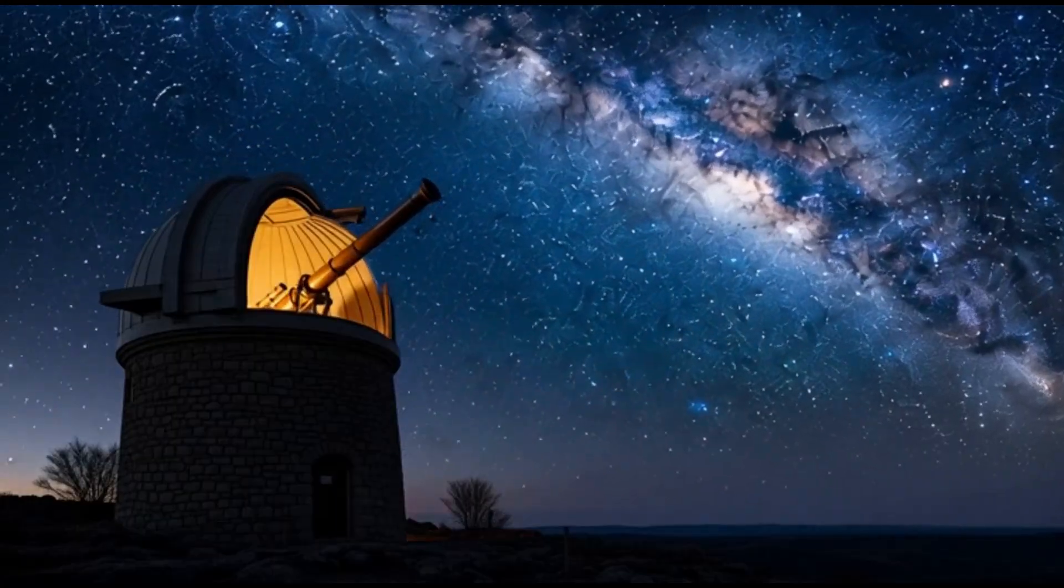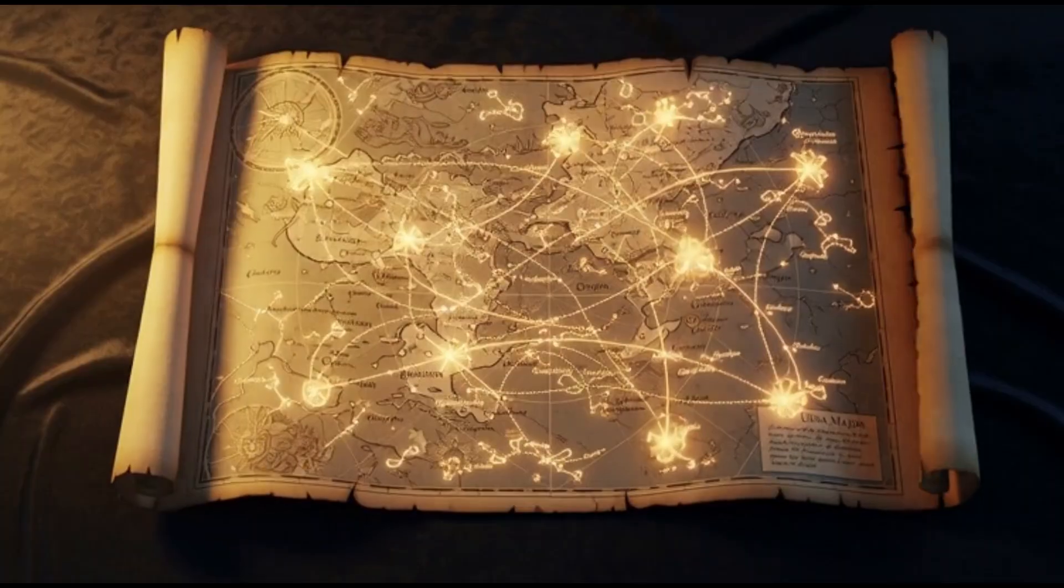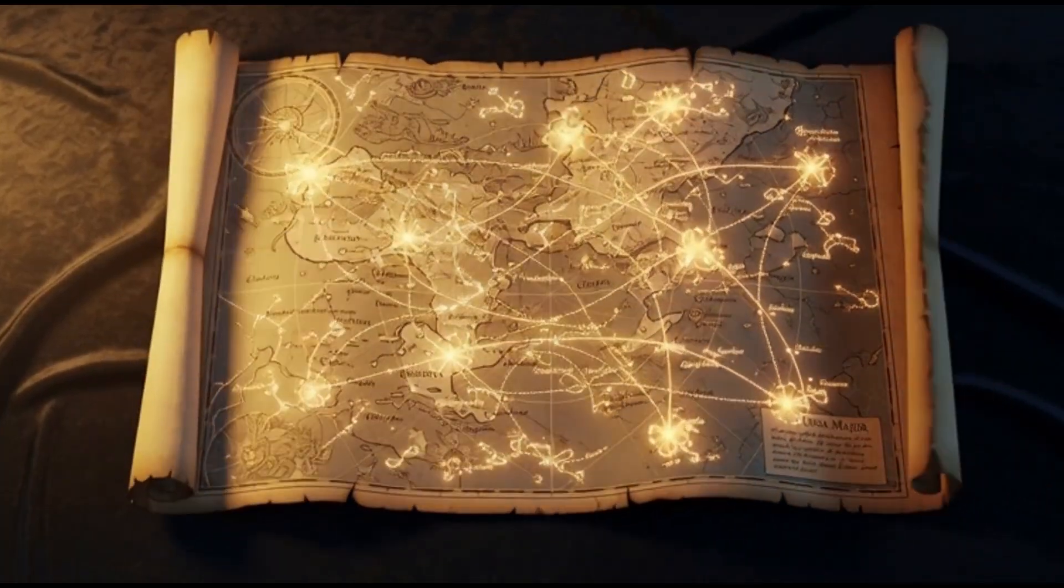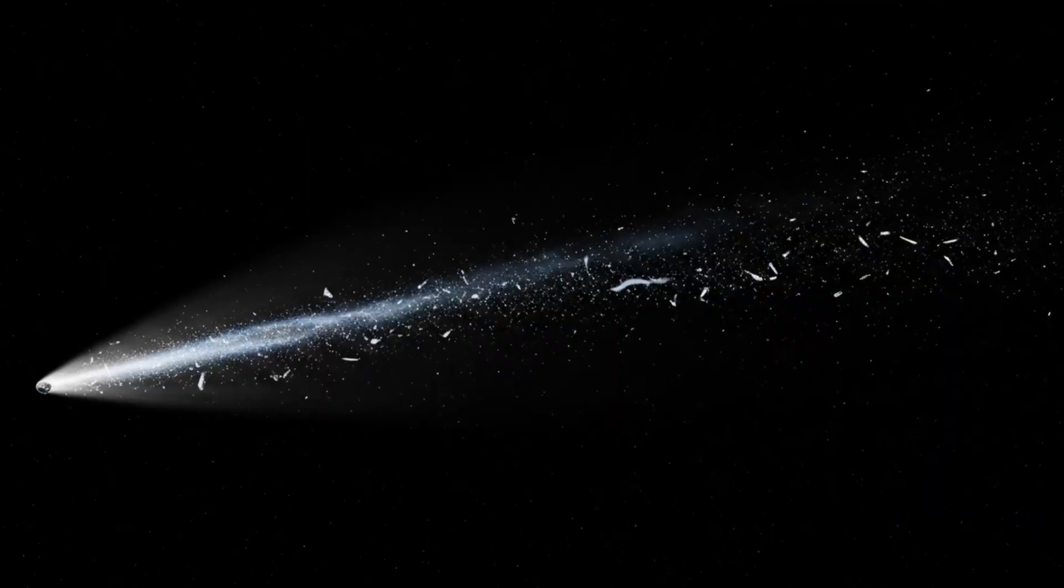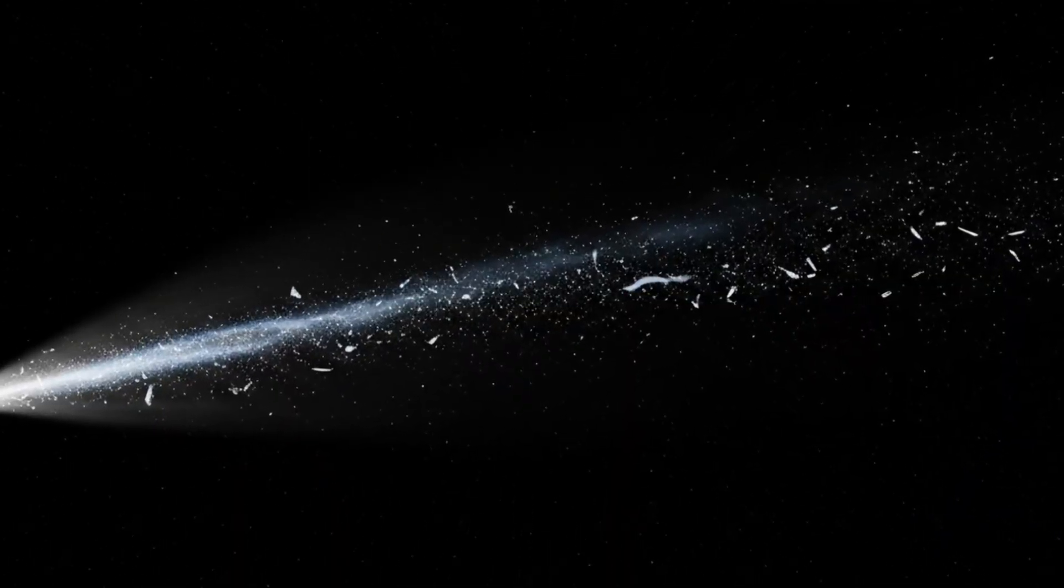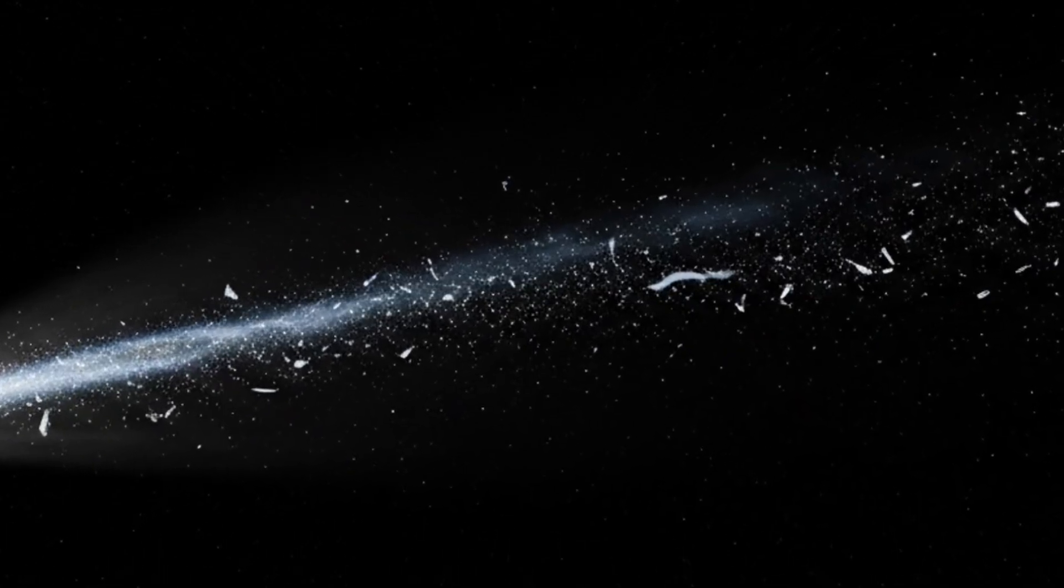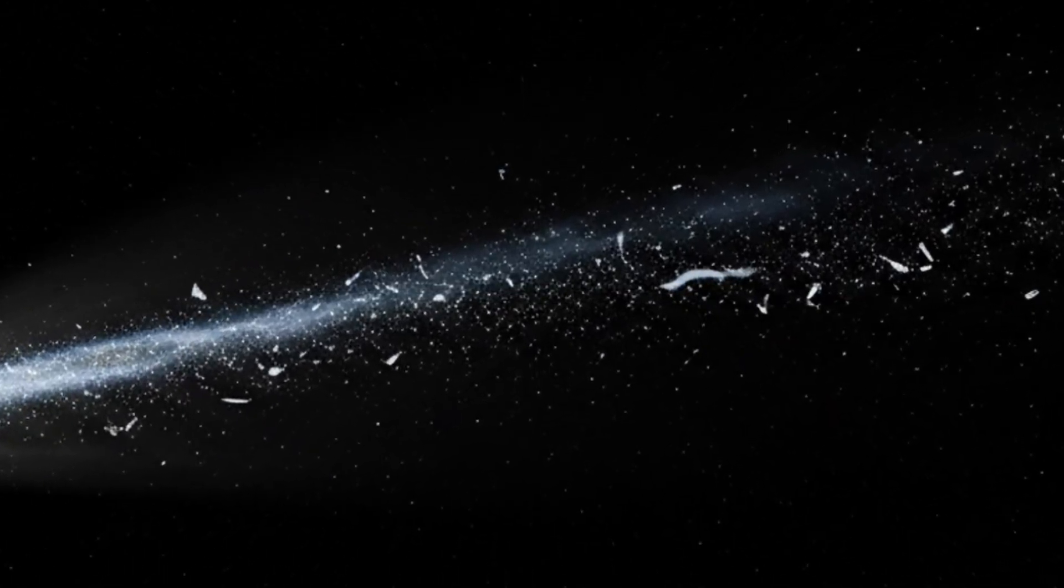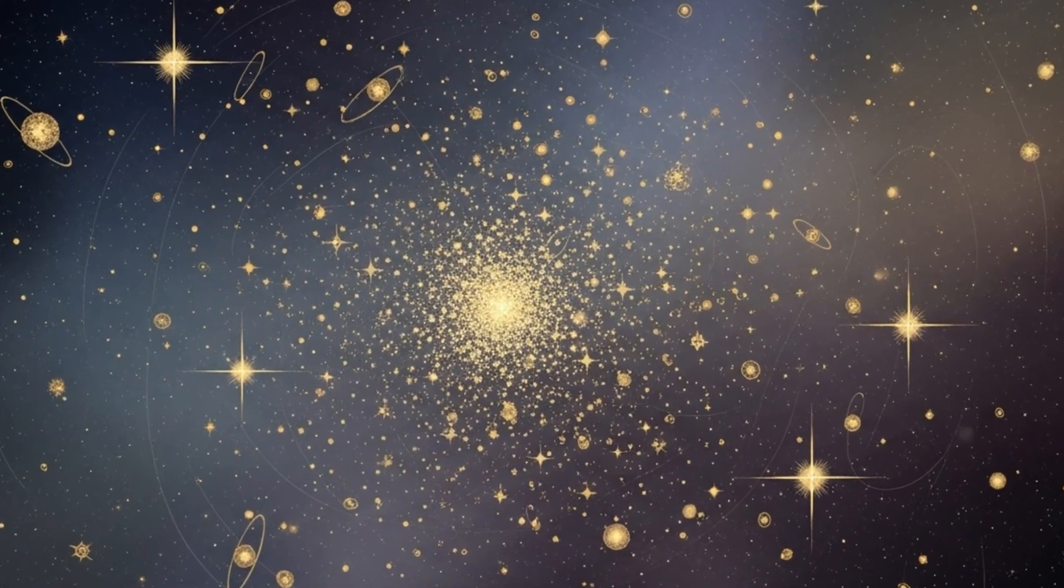At first it looked like a comet, then its speed, its path, and the stuff blowing off it started to look downright impossible. Telescopes around the world scrambled, papers piled up, and rumors filled the gaps. Today we're going to skip the noise and focus on the hard, strange facts. How it arrived, what it's made of, and why those details could rewrite everything we thought we knew about other star systems.